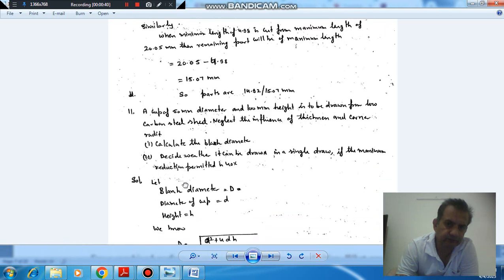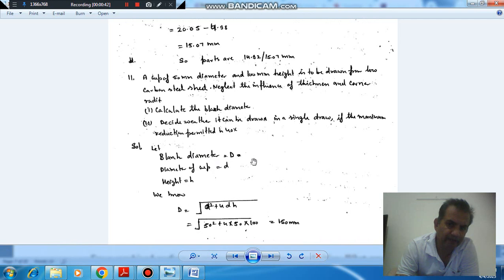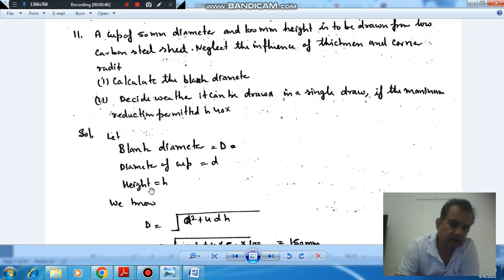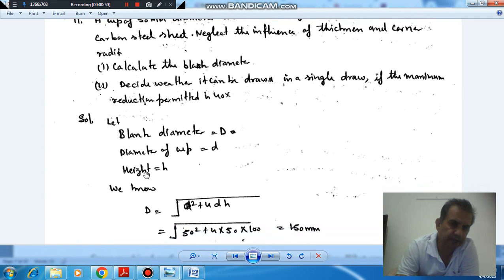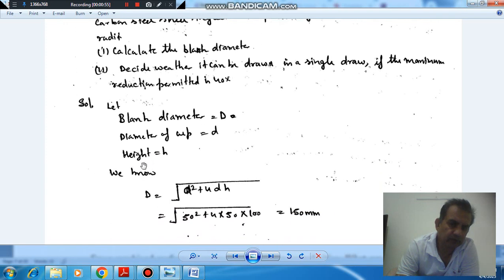So here, the blank diameter is D and diameter of cup is small d, and height is h. The diameter of the cup is given as 50 mm and height is given as 100 mm.